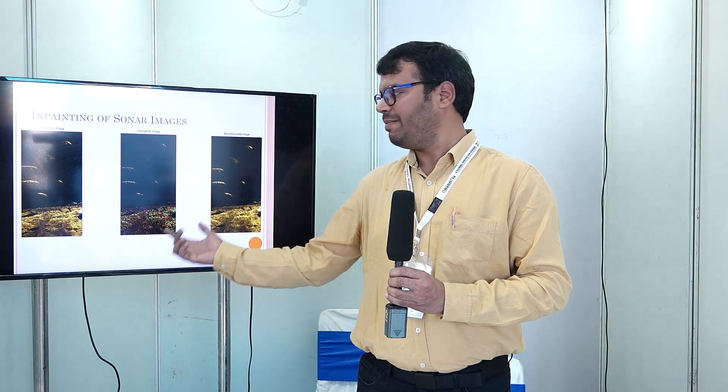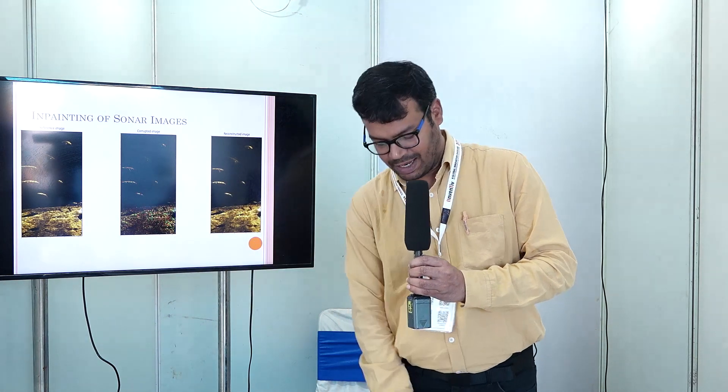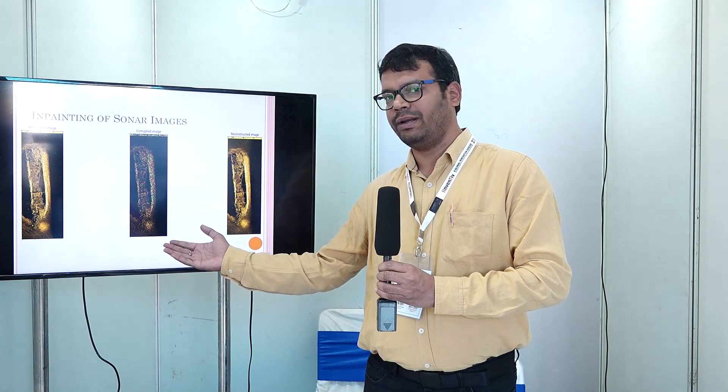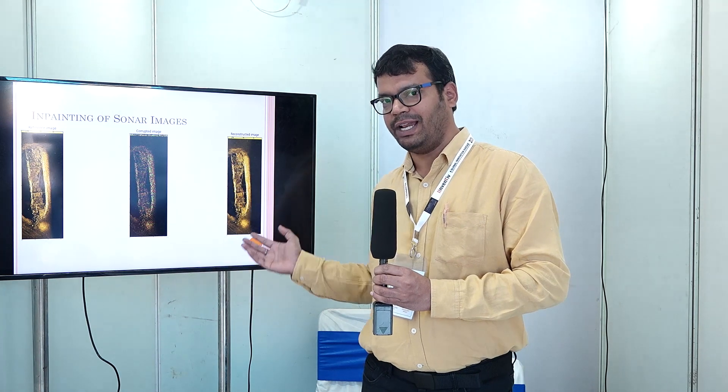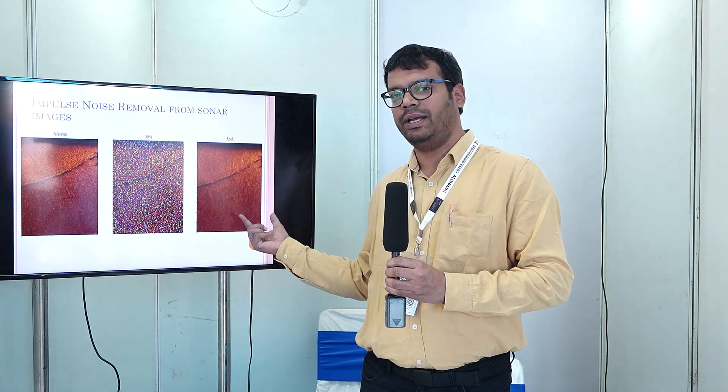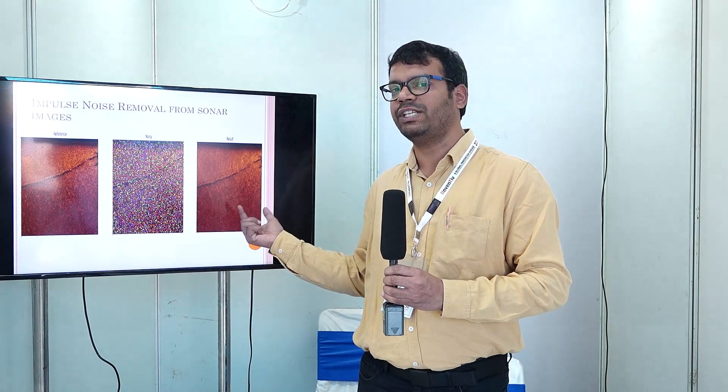Some examples are shown here — you can see a distorted image and a clear image. Another example shows a distorted sonar image alongside a clear image. Similarly, considering impulse noise, you can see the noisy image and the noise-free image.